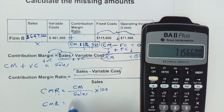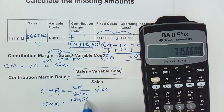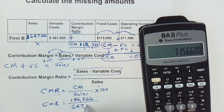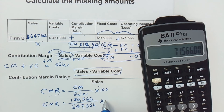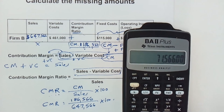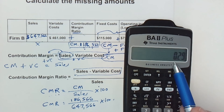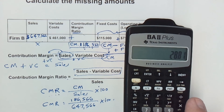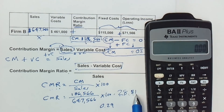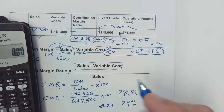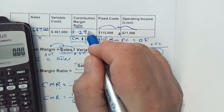Our contribution margin ratio equals our contribution margin of $186,566 divided by our sales of $647,566, multiplied by 100. So: 186,566 ÷ 647,566 = 0.29, then multiplied by 100 gives us 28.81, which rounds to 29% due to some rounding in the calculator. Our contribution margin ratio is 29%. That is how we find contribution margin ratio and sales when we don't know those figures.